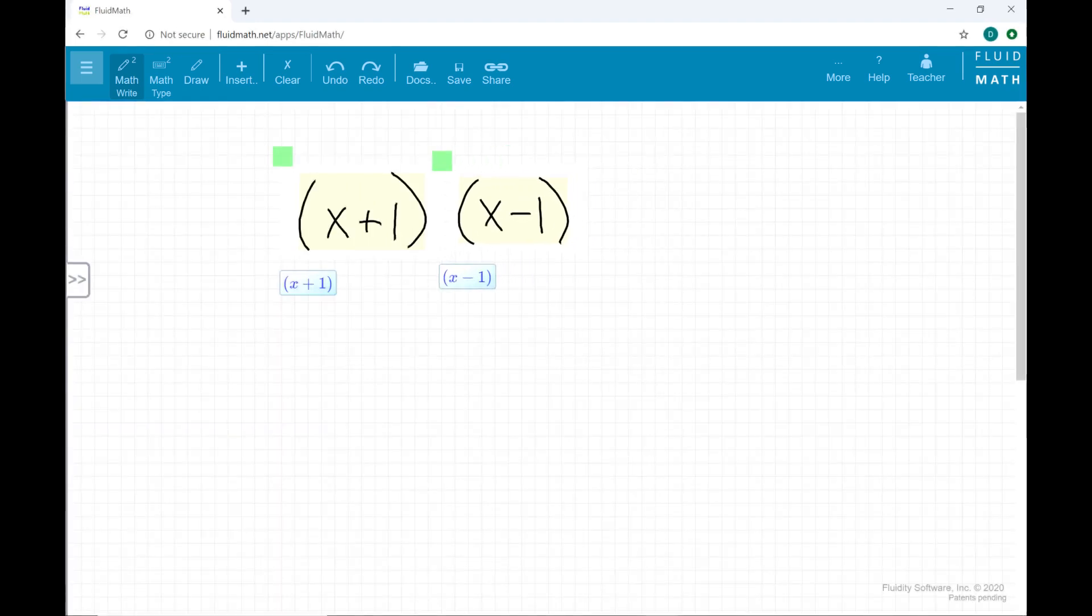You can combine numbers, variables, and symbols that are separated by dragging from the green square in the upper left-hand corner of the number symbol or group of numbers or symbols.